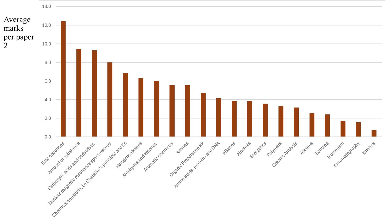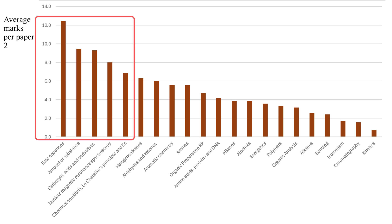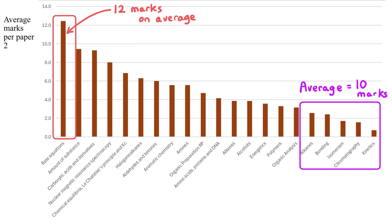If you prefer to see things in graphical form, the same data and same conclusions are available visually. It looks even more stark this way — rate equations is firmly in the lead, with other topics following close behind. But it also paints quite a stark picture because some topics really aren't assessed very much at all. Alkanes, bonding, and isomerism — on average those final five topics are worth about as much as rate equations only once you've added them all together.